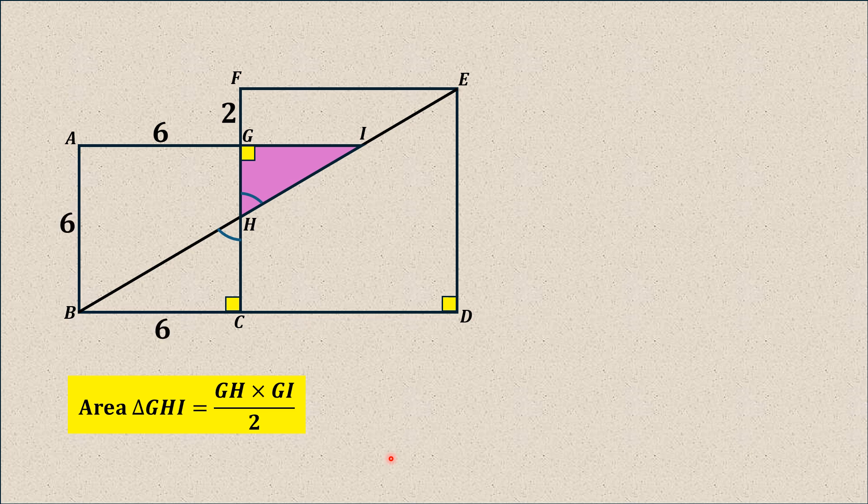First of all, we take the correspondence between two triangles. Since this side length is 6, therefore each side of this square is 6, and since this length is 6, this length is 2, so each side of this larger square is 8.